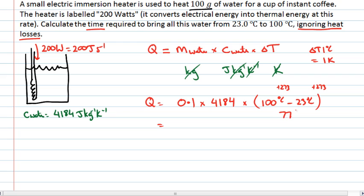So if we multiply those three things together, we end up with 32,216.8 joules. That's the total amount of energy which is required in order to change the temperature from 23 to 100.